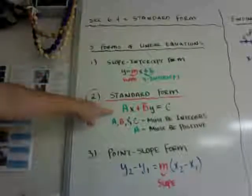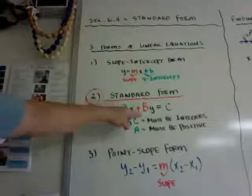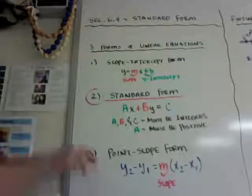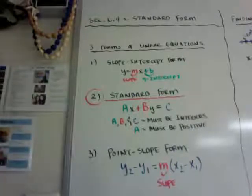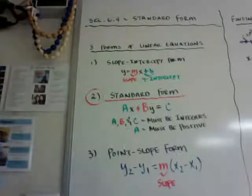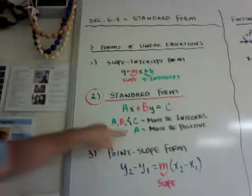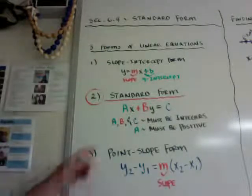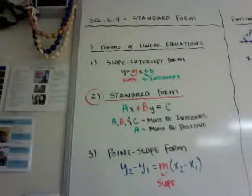There are two rules to standard form. A, b, and c — the number in front of the x, the number in front of the y, and the number after the equal sign — they have to be integers, which means if they're fractions, you have to multiply them by the denominator to make them into integers. So they cannot be fractions or decimals. The second rule: a must be positive. In some books it doesn't have to be, but if you make it positive, it doesn't matter what book you're dealing with — you're going to be correct.